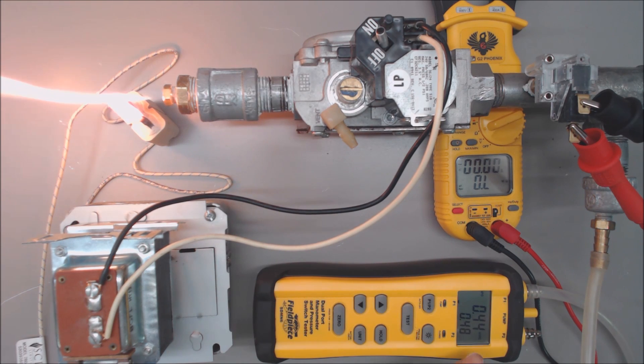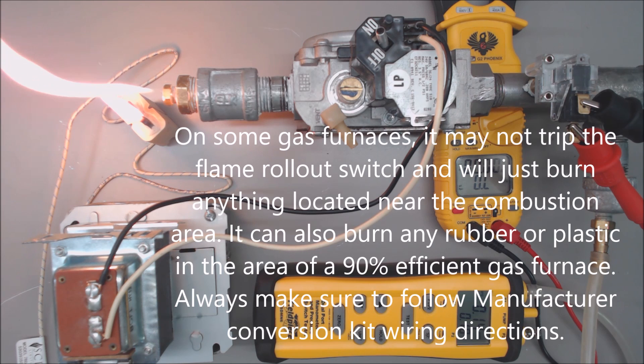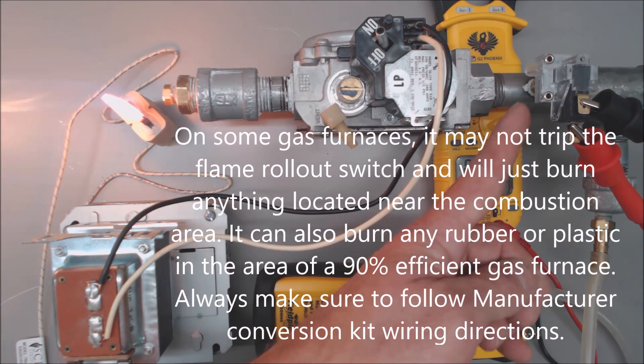Now you see our water column readings down at 0.4, 0.3. You see the flame is actually heading almost straight up and that would end up lighting anything on fire potentially in the combustion area as well. It's going to end up tripping the flame rollout switch as well. So that would be a dangerous situation when a propane tank is low on gas and that's why we want to make sure that we have this wired in with the limit switches.